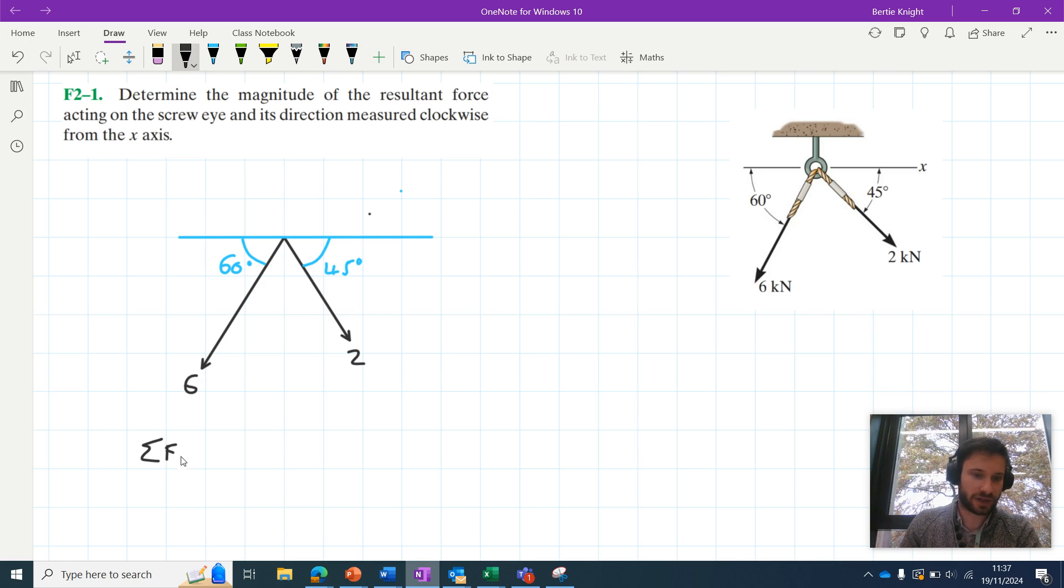So I could say that the sum of the x-forces or the sum of the horizontal components here is equal to, in this case, 2 cos 45 minus 6 cos 60. Minus because the horizontal component of this 6 kilonewton force is actually to the left. And when we add that all together we get minus 1.58.